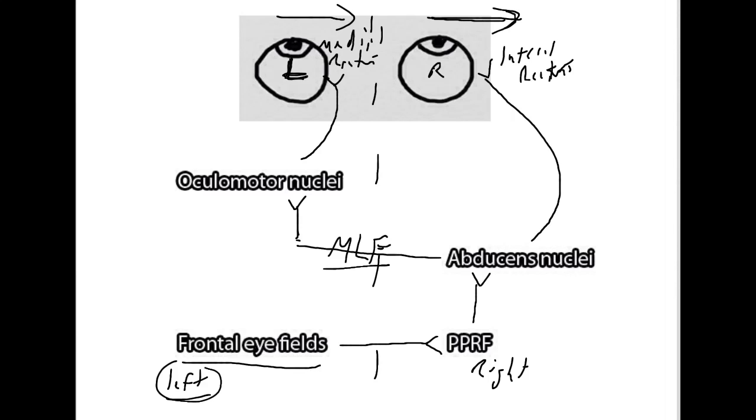And vice versa, if the seizure is happening on the right side, you'd expect the eyes to move to the left. So, that's kind of a way to work through the circuitry using a disease process to understand it a little better.